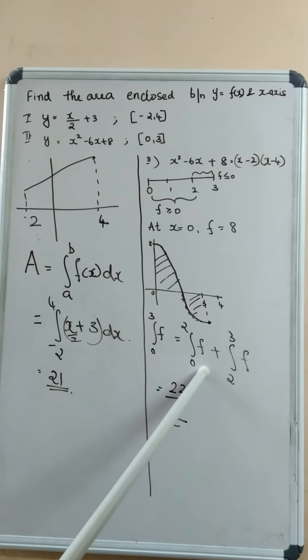And integral 0 to 2, f, the function is x square minus 6x plus 8. Substitute and integrate, you will get the answer as 22 by 3.